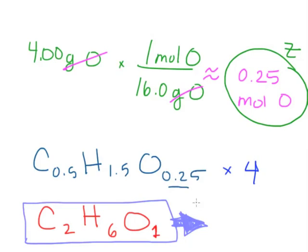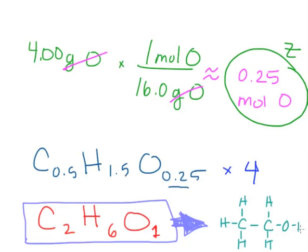Let me draw it quickly so you can see what it looks like. That's what ethanol looks like. As you can see, we have 2 carbons, 6 hydrogens, and 1 oxygen. There you have it — that is the empirical formula of ethanol.